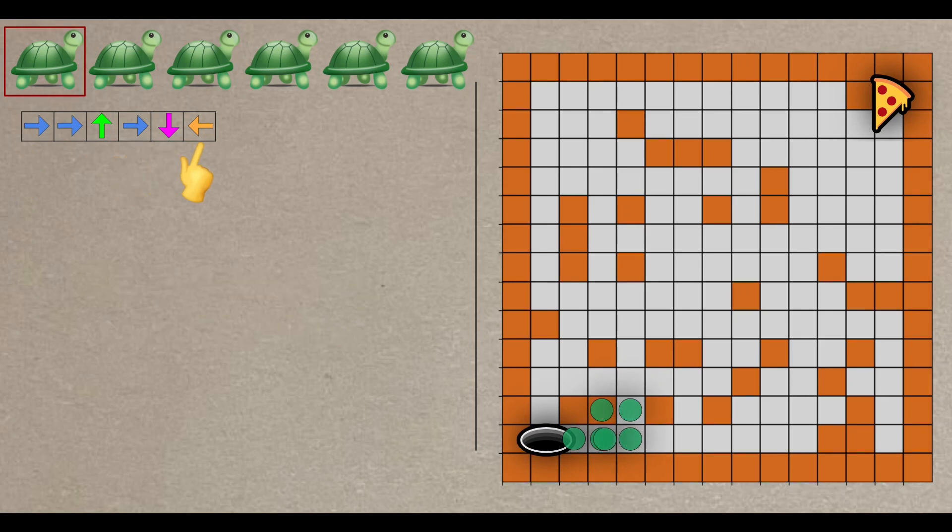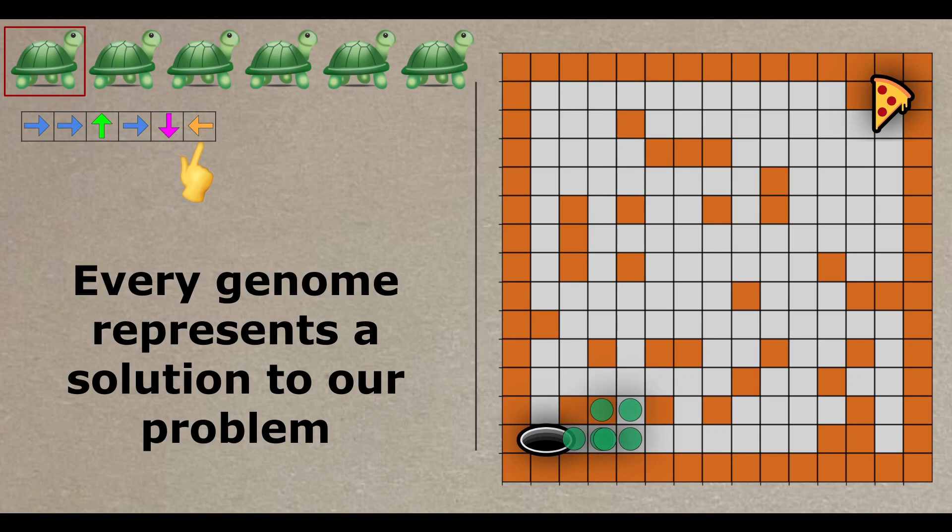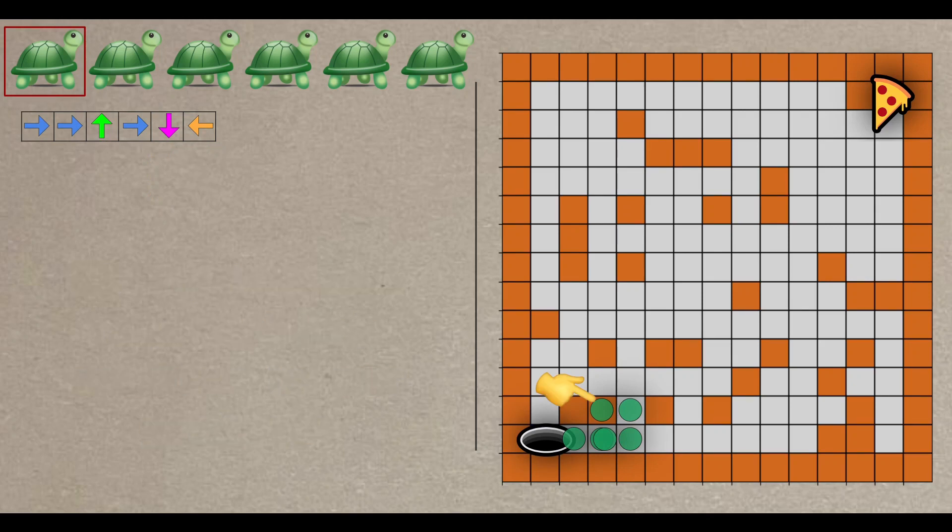It's important to understand that these genomes represent the solution to our problem. In this particular example, you can observe that the turtle crossed the wall, which is not allowed. In the next step, I'll demonstrate how we handle such constraints.